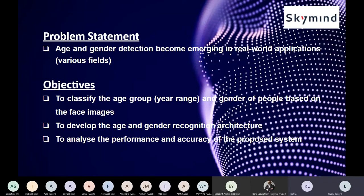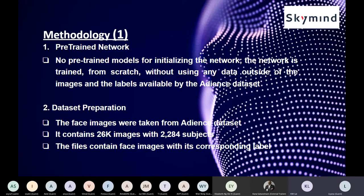There are three objectives we want to focus on. The first is to classify the age group in year range and gender of people based on the face image. The second is to develop the age and gender recognition architecture. The last is to analyze the performance and accuracy of the system. The network is trained from scratch without using any data outside the images and labels available in the Adience dataset.